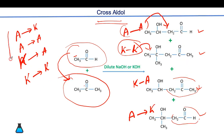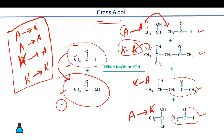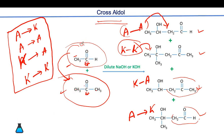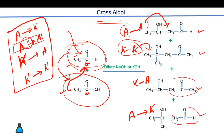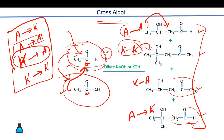When asked what the major product is in a cross aldol condensation, identify which carbonyl compound provides the better nucleophilic site — the less sterically hindered one. The aldehyde carbon has greater partial positive charge and is less sterically hindered, making it a better electrophilic site. In general, the aldehyde-aldehyde product is the major product, and ketone-attacking-aldehyde is the second major product. Cross aldol condensation is generally avoided due to product mixtures.